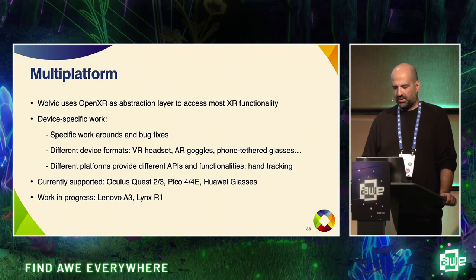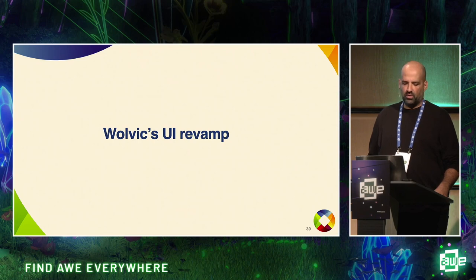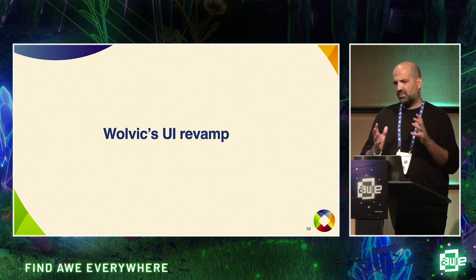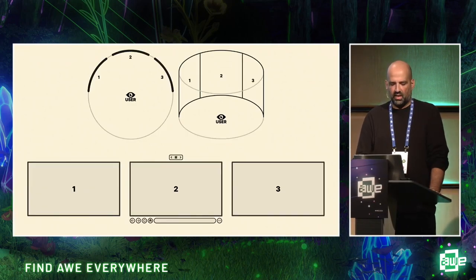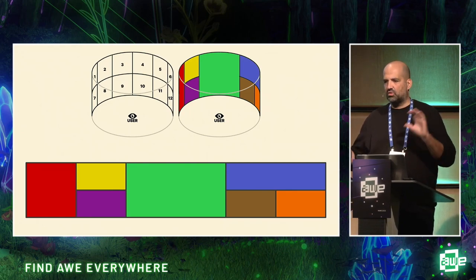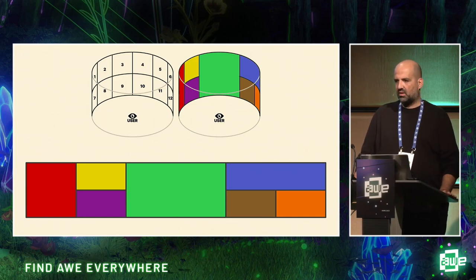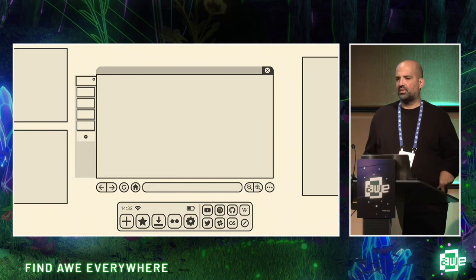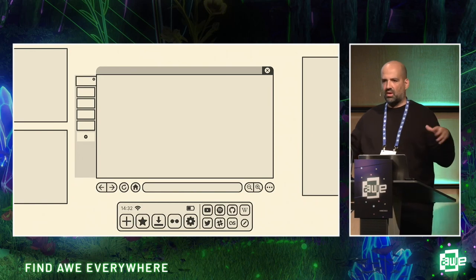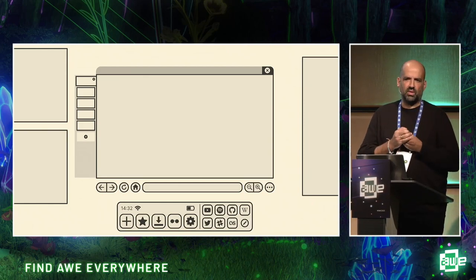An area where we are quite active is the UI metaphor. The browser is still a bit traditional — you see a 2D browser with menus — and we are progressively moving away from that. We're going from just three same-size windows to a very flexible way of organizing windows of different sizes. We will soon allow configuring the distance between the window and the user. We are also exploring more 360-oriented ways of presenting information — bookmarks wouldn't need to be a hidden menu; they could be around you and you can grab and throw them to a tab.